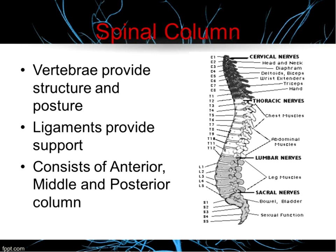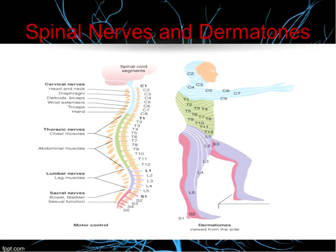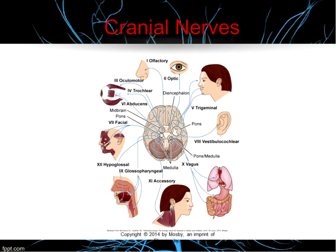This slide gives an overview of the nerve and how it translates to dermatomes. You're not expected to memorize dermatomes, but the main reason it's shown is that if a patient is complaining of numbness in a particular area, looking at the dermatome map can help you figure out which nerve is being impacted.